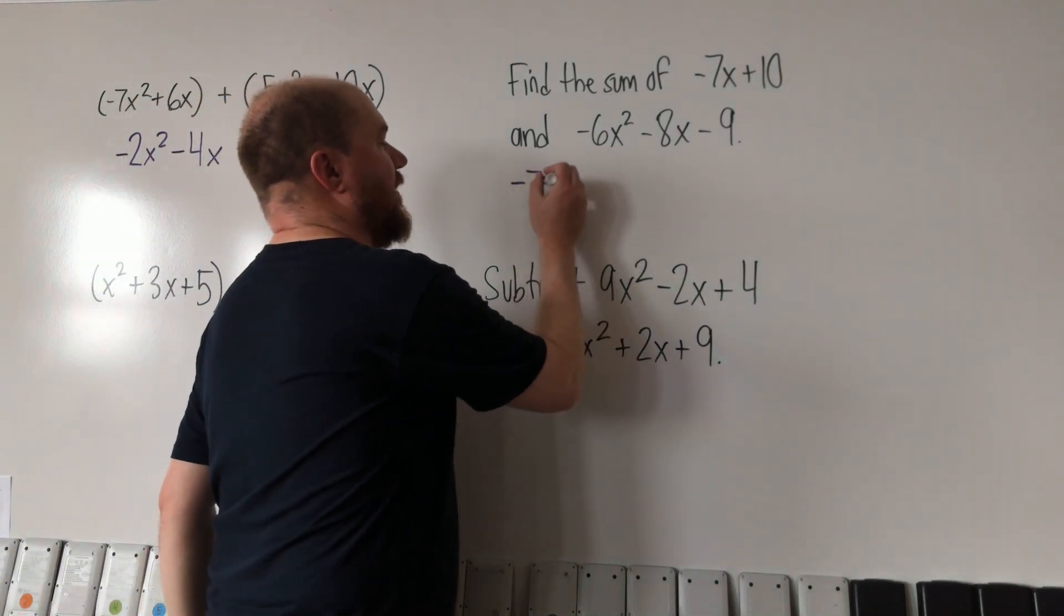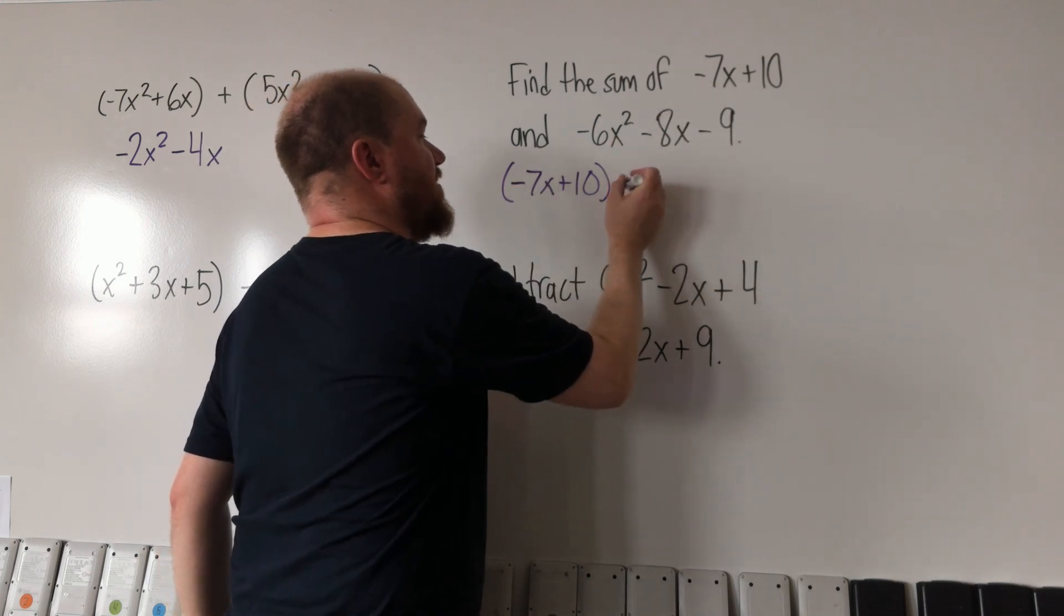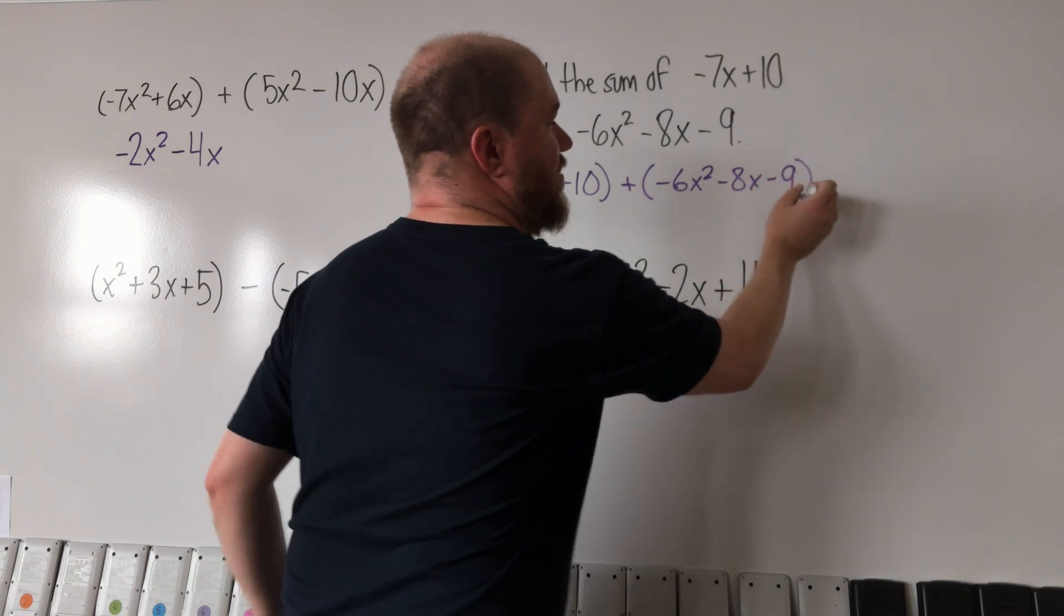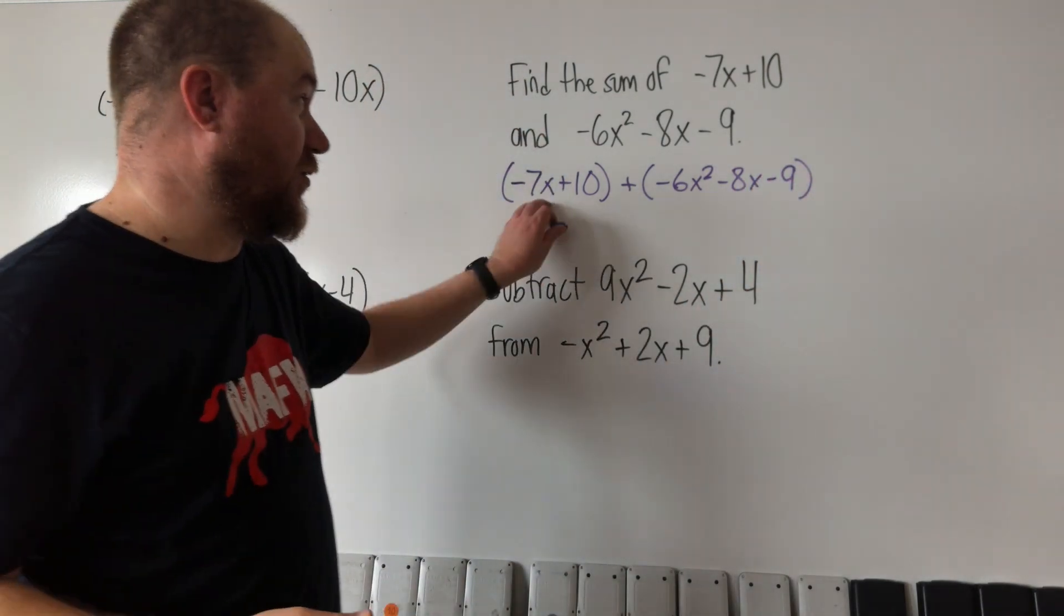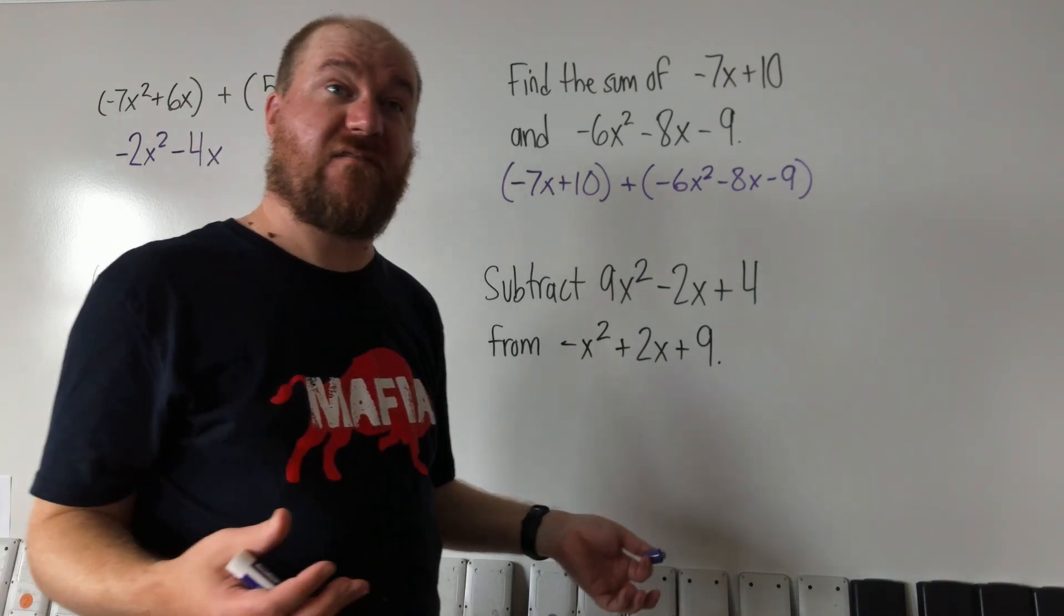So if I write it like this, the first thing they gave us needs to be added to the second thing they gave us. And again, the parentheses are just there to tell you these were grouped together and these were grouped together. We're going to drop the parentheses and combine everything together.